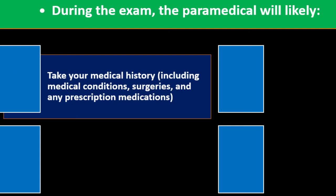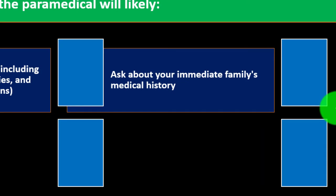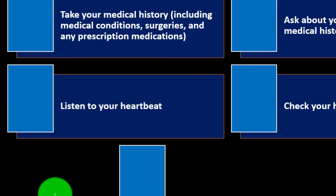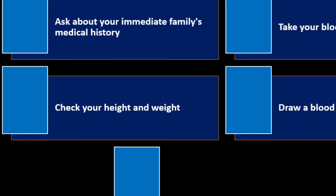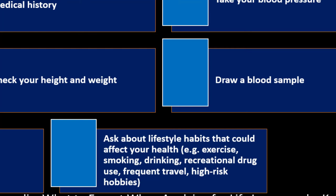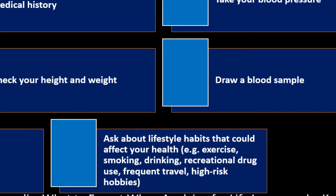The paramedical will ask about your immediate family's medical history, take your blood pressure — so stay calm, because stress can raise your blood pressure and raise the price — listen to your heartbeat, take your height and weight, draw some blood, get a urine sample, and ask about lifestyle habits that could affect your health, like exercise, smoking, drinking, recreational drugs, frequent travel, and high-risk activities.